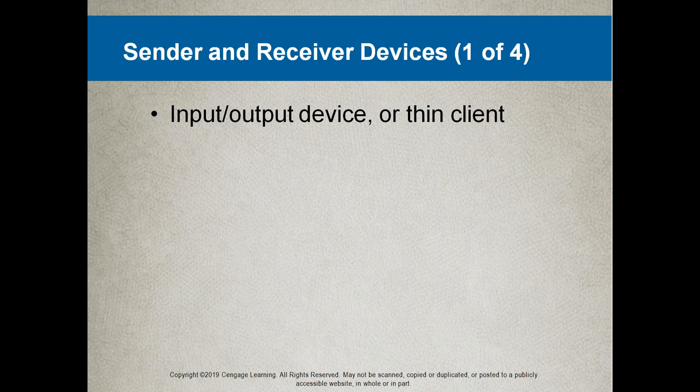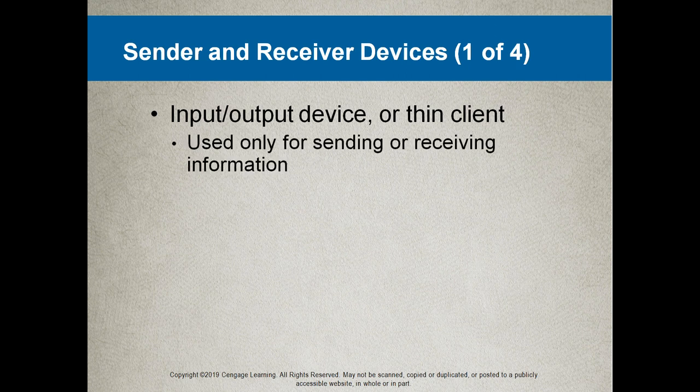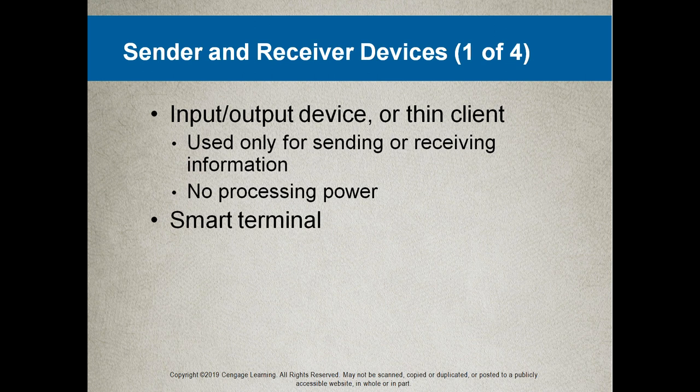Input-output devices, or thin clients, are used only for sending or receiving information and have no real processing power. An input-output device is something like the till at your local supermarket — it can only really do one thing. It doesn't have any processing power and is only used for sending and receiving information, such as sending a barcode to a server and the server returning the price of the item.